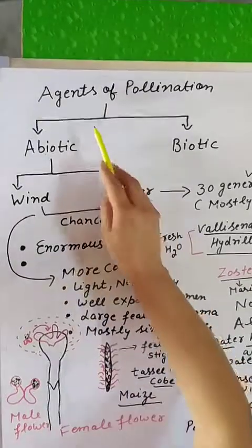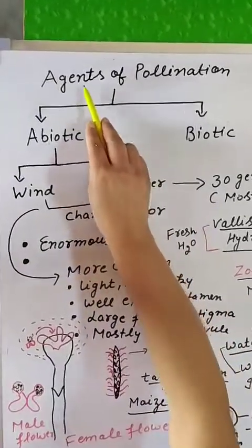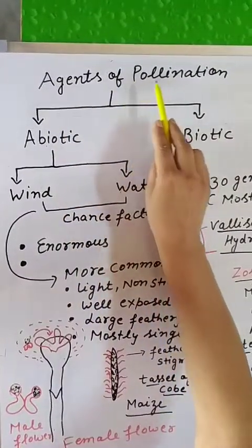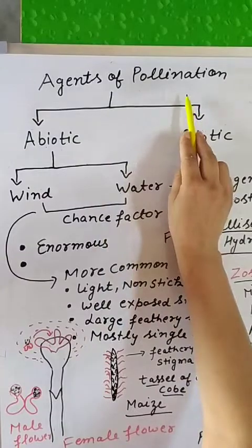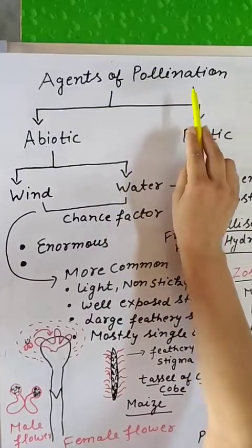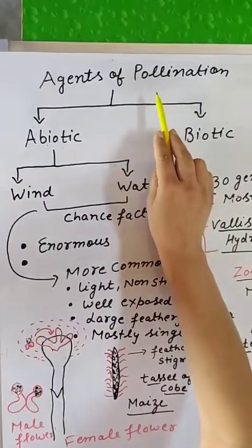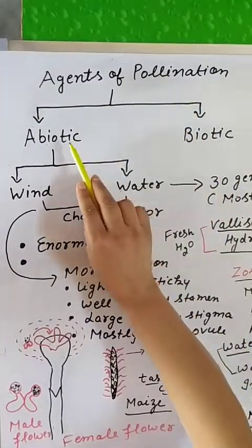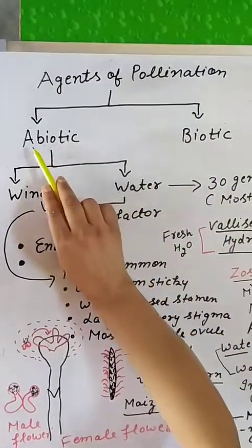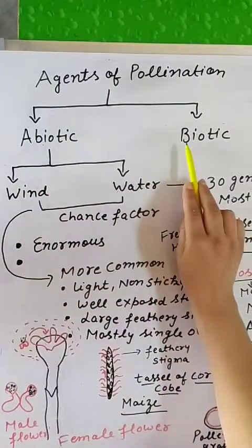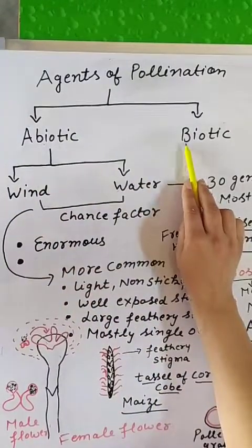Hello students, today we are going to discuss agents of pollination of class 12th biology chapter 2nd. There are two agents of pollination: first is the abiotic and second is the biotic.